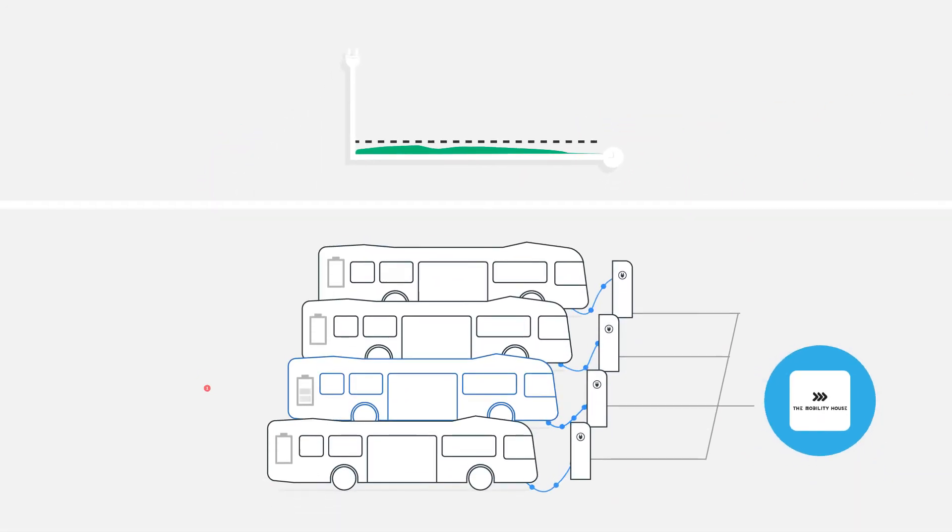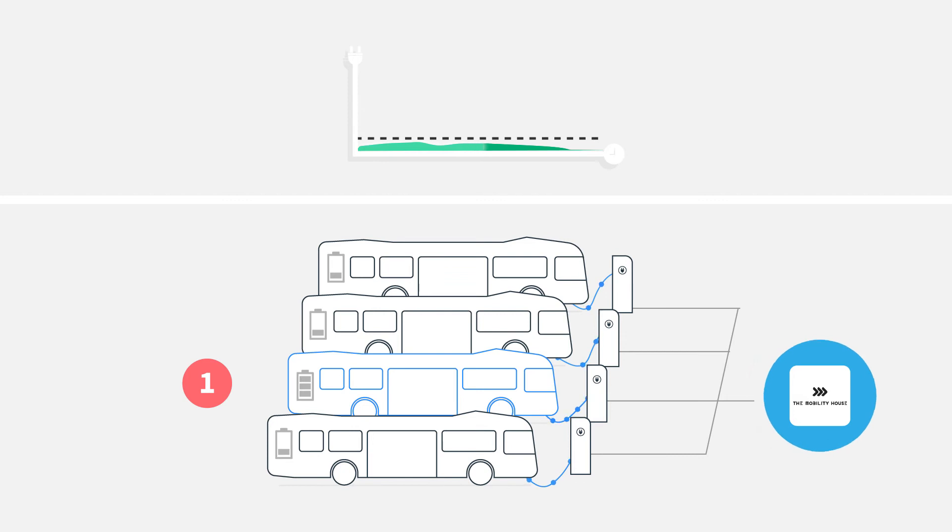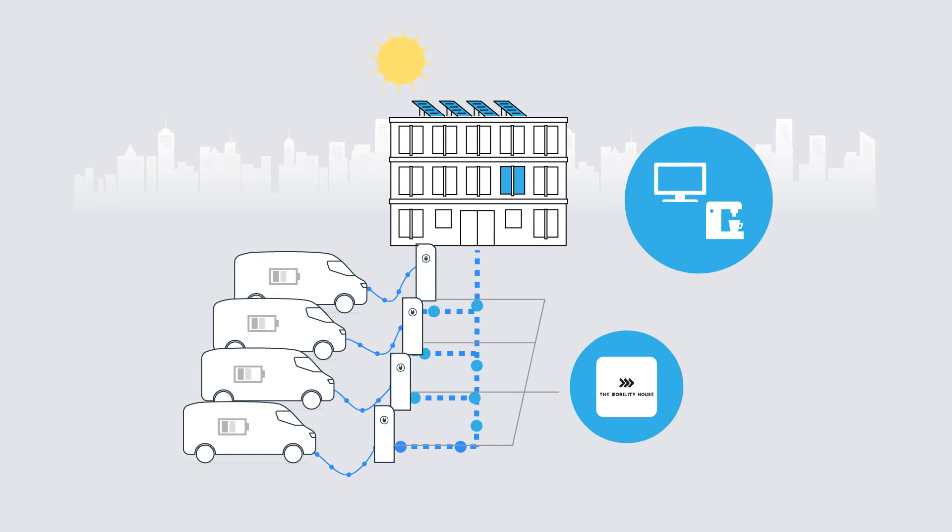Some vehicles will leave earlier than others. Charging these can be prioritized. And to make the most out of your energy use, you can even take site loads and solar plants into account.